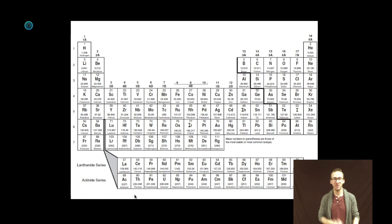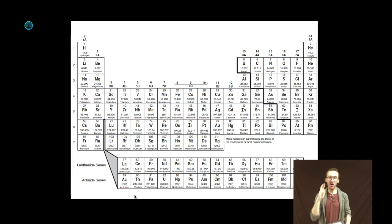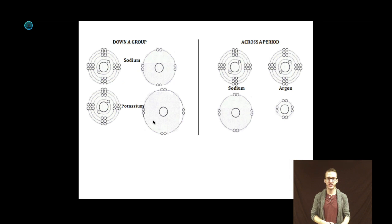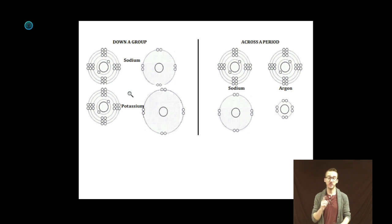Hey, what's up my chemistry people? Mr. Boylan here. Let's do some quick practice with the CVR model of the atom. As you take a look at your notes, we're going to build a couple CVR models of the atom down a group and then across a period. We're going to take a look first at a couple of atoms in the same group — in this case, sodium and potassium.